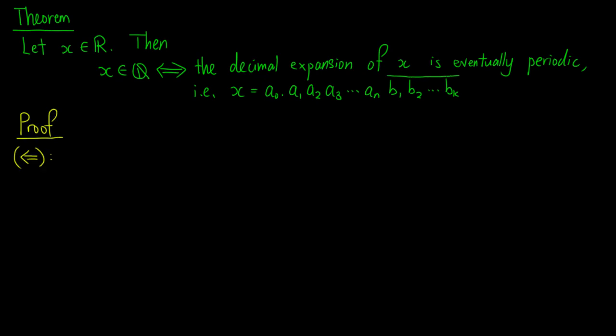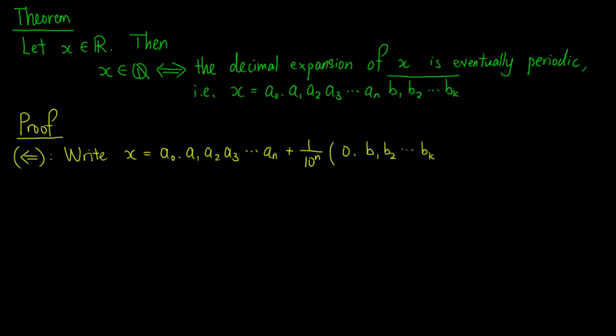Let's try to prove the left implication first, which is easier. We write x in the form x equals a0.a1, a2, a3, all the way to an, plus 1 over 10 to the nth power times 0.b1, b2, up to bk, where b1 up to bk are the repeated digits. Note that this is equivalent to the given form, because a shift in the decimal point corresponds to a factor of 10. In particular, the digits b1 to bk are shifted n digits towards the decimal point, so we multiply the number by 1 over 10 to the power n.